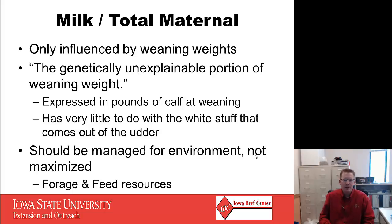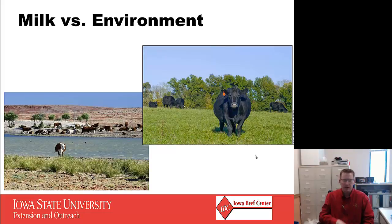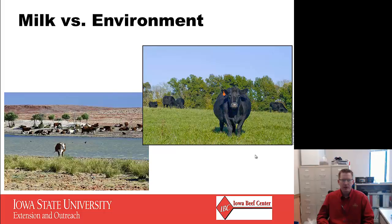Milk should be managed for environment and not maximized — matching feed and forage resources to the animal's ability to milk while still getting rebred the following year. Here in Iowa, some of us deal with the fescue belt, and milk requirements in that part of the state differ greatly from areas with much better grass. The depiction shown illustrates milk versus environment: the lower left would require far less milk than the upper right. In a harsh region, low milk is almost required to get females rebred.